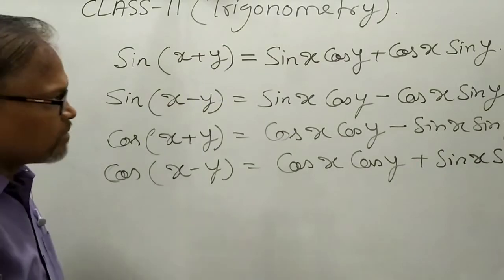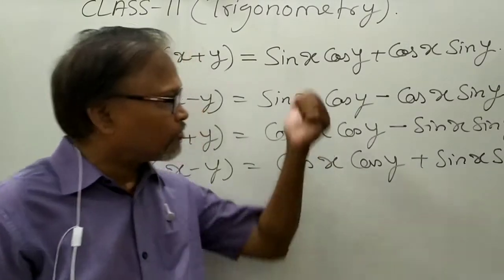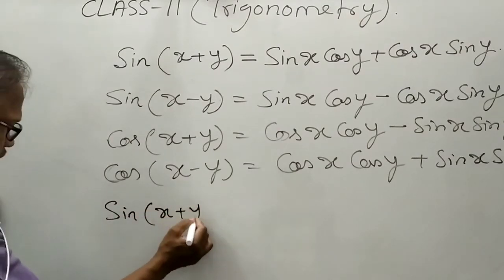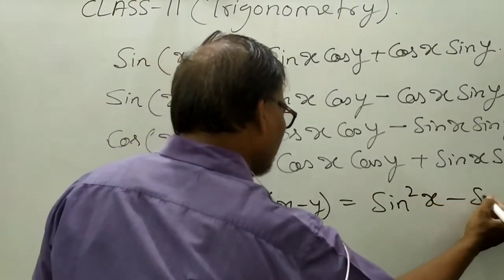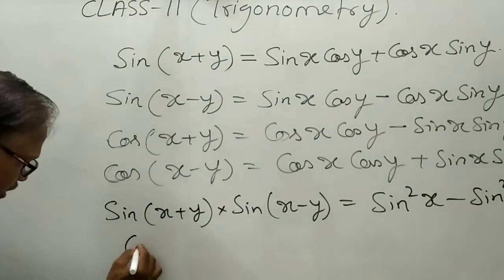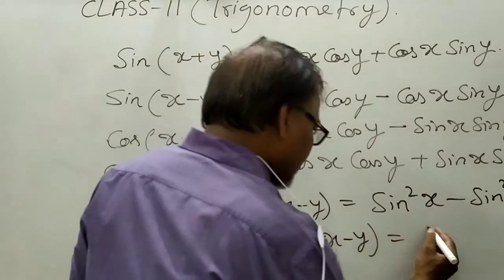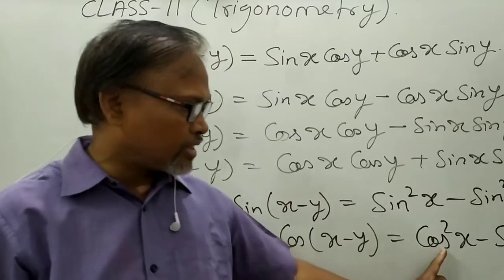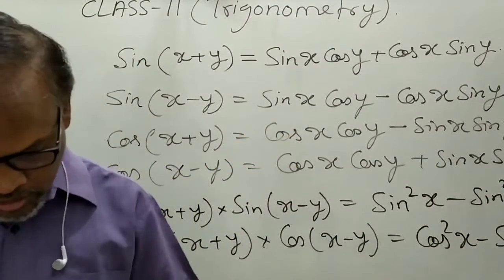So these are the four formulae. In addition, if you multiply sin(x + y) into sin(x − y), you will get sin²x − sin²y. And when you multiply cos(x + y) into cos(x − y), you get cos²x − sin²y. These are additional product formulae within the same topic.